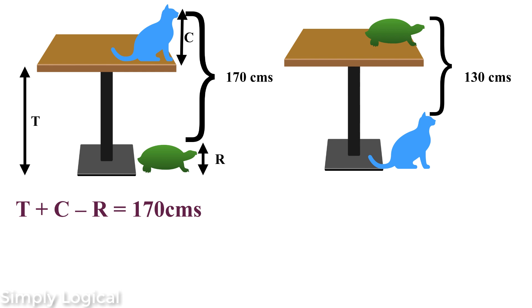As per the second diagram, total height of the table along with the tortoise, excluding the cat height, can be written as T plus R minus C equals 130 cm. If you observe it carefully, the height includes the table and the tortoise, excluding the height of the cat. Hence the equation becomes like this. Now we have formed two equations.